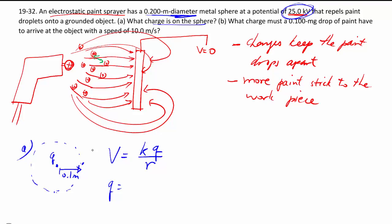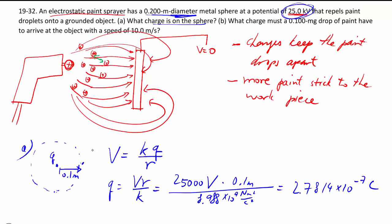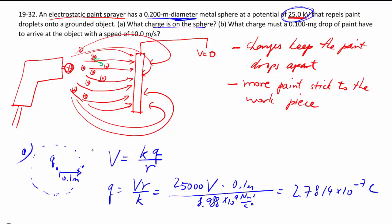So flipping this around to solve for Q, it's as simple as putting all that together. So that's 25,000 for kilovolts times my 0.1 meters divided by my Coulomb's constant. Then we will get, in this case, about 0.3 microcoulombs.